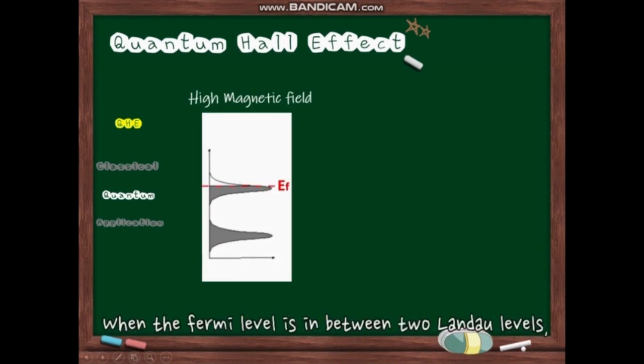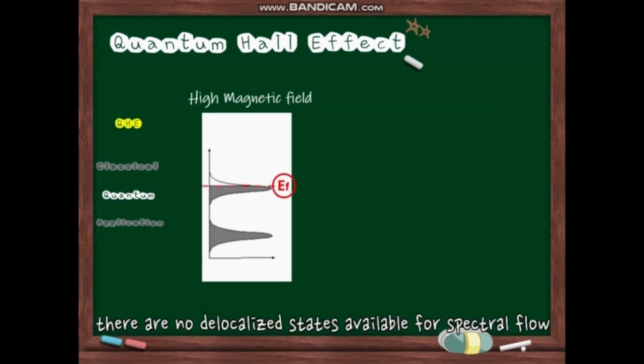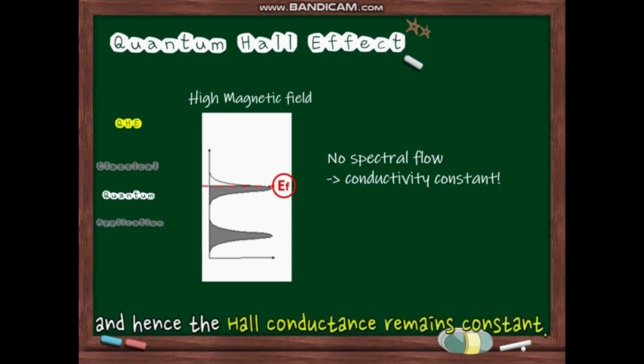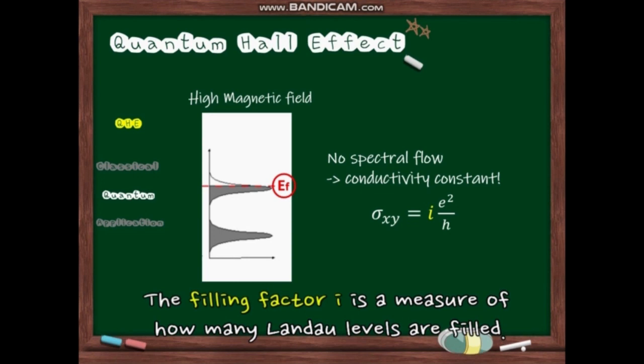When the Fermi level is in between two Landau levels, there are no delocalized states available for spectral flow and hence the Hall conductance remains constant. The filling factor I is a measure of how many Landau levels are filled.